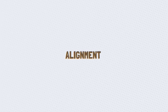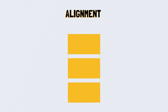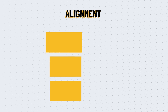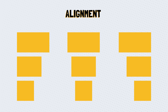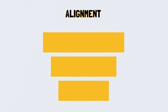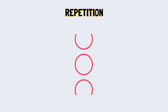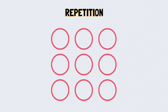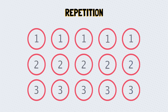Alignment refers to the position of the element on a layout — the way the visual elements are arranged so that they line up. The alignment can be left, right, justified, or centered. Repetition in design creates consistency by repeating the same element within a layout multiple times. For example, page numbers.